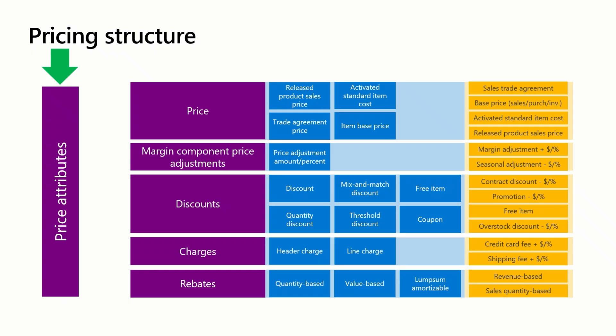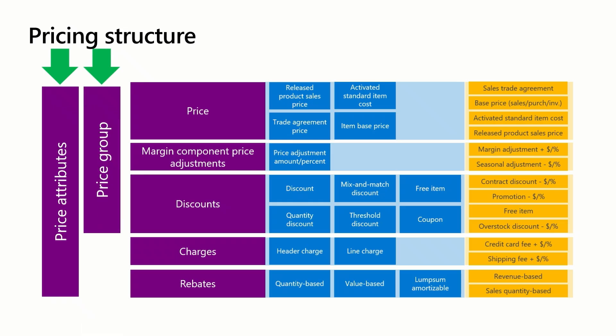Price attributes can be used across all these price components and provide a flexible way for you to define your pricing factors. They leverage information about customers, products, as well as sales order header and lines. Extension points are available to extend the price attributes. Price groups enable businesses to bundle and rank these attributes together and apply customized pricing strategies more effectively across price, margin, and discount price components.